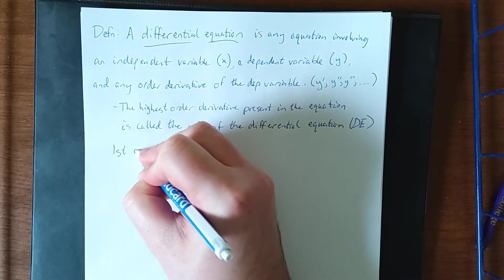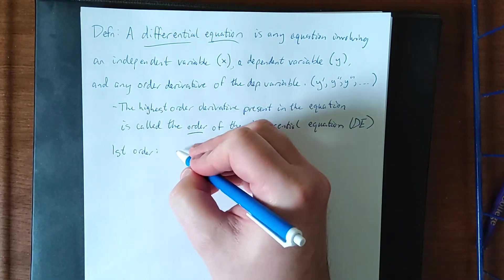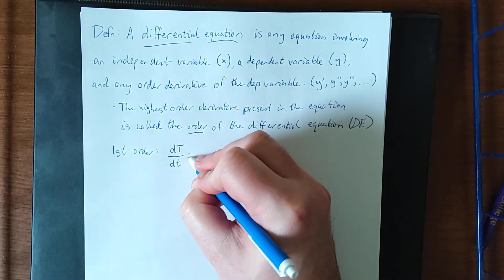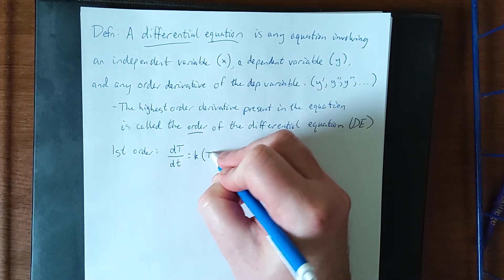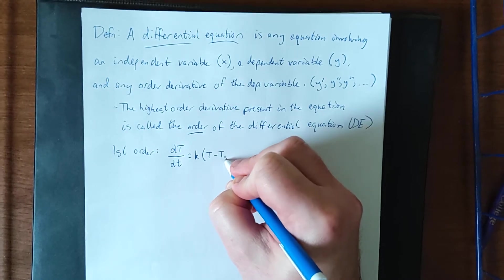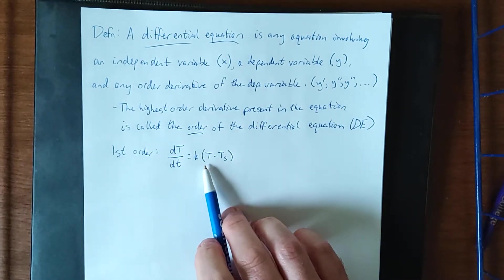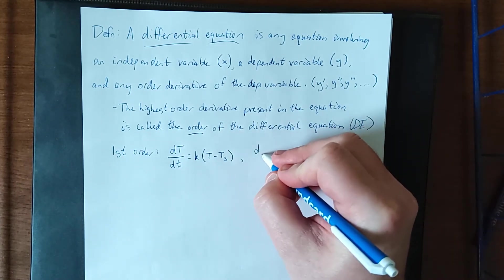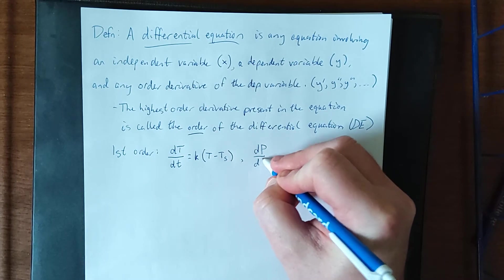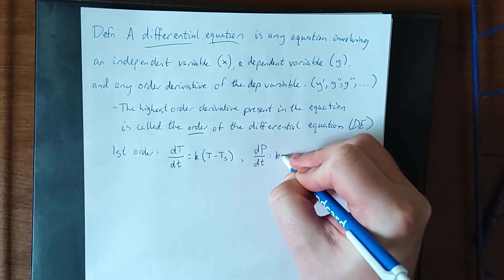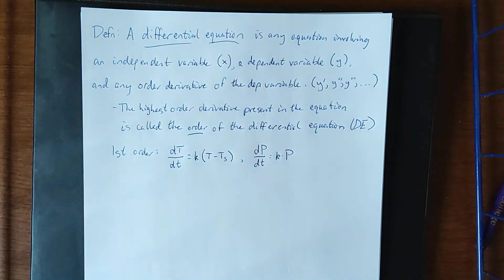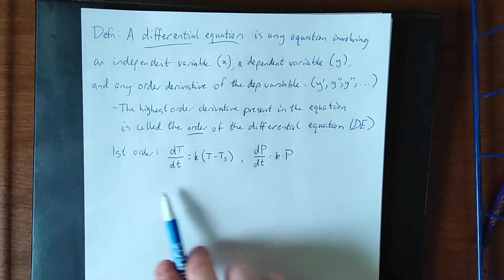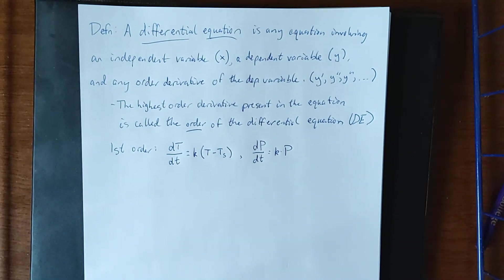So an example of a first-order differential equation could be something like what we use for Newton's law of cooling. The rate at which the temperature of an object changes is proportional to the difference between the object's temperature and the temperature of the surroundings. We could also use the Malthusian growth model that says that the rate at which a population changes is proportional to the size of the population. Because the highest-order derivative present in either of these models is a first derivative, we would call this a first-order differential equation.